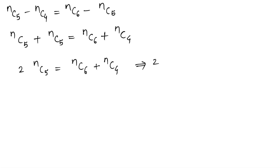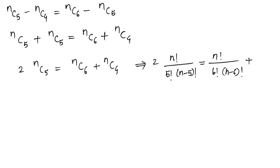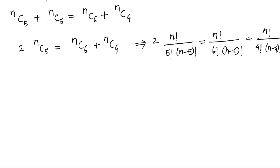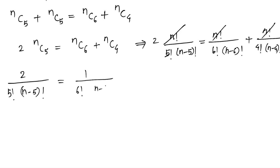Now let us write this out. 2 times n choose 5 is n factorial divided by 5 factorial times (n minus 5) factorial, which equals n choose 6, that is n factorial divided by 6 factorial times (n minus 6) factorial, plus n factorial divided by 4 factorial times (n minus 4) factorial. We can cancel the n factorial throughout.